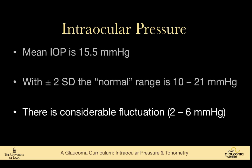There is also considerable fluctuation in the intraocular pressure — two to six millimeters of mercury throughout the day. So if you measured my pressure, it would not be 14 millimeters of mercury every time; it would fluctuate some. And there's more fluctuation in patients who have glaucoma.